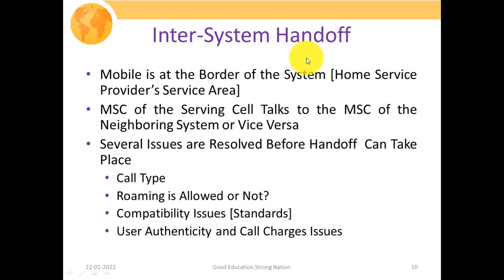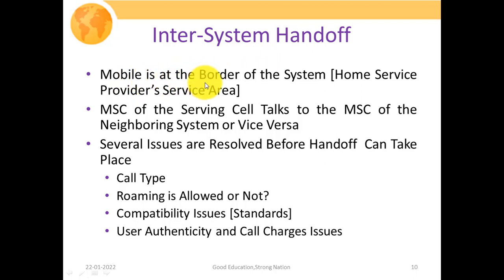The second type is inter-system handoff, where a user moves from the coverage of one MSC to another MSC. Unlike intra-system handoff where all essential parameters remain the same, in inter-system handoff we have to consider additional important parameters to perform a successful handoff. Here, the mobile is at the border of the home service provider's service area and moving to another service area, so we must consider what type of implementation is present in the other area.